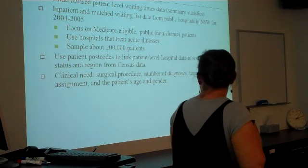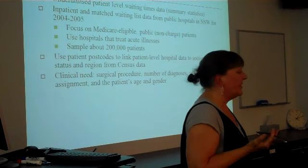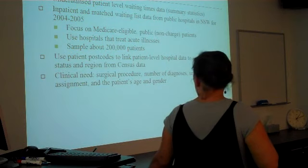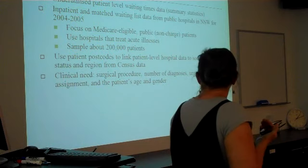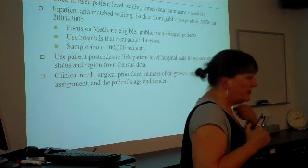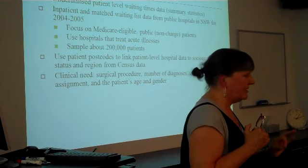So, we're going to use that postcode information to link the socioeconomic status of the region where the person lives to the hospital data. We're also going to use that for ARIA. That's remoteness, the remoteness index. And, well, of course, we also know what area health service they're in. So, clinical need. Our measures of clinical need are the surgical procedure, the number of diagnoses, the urgency assignments, and the patient's age and gender. So, they're all variables about pretty much about the patient. It's not about the system. It's about the patient.